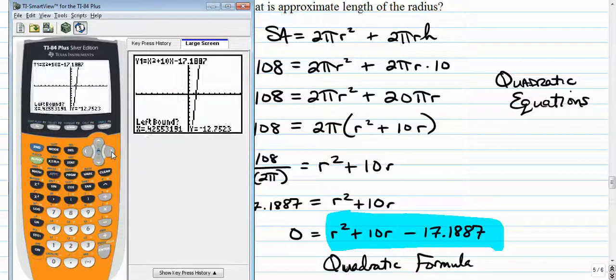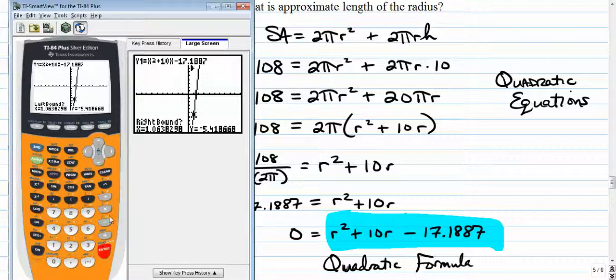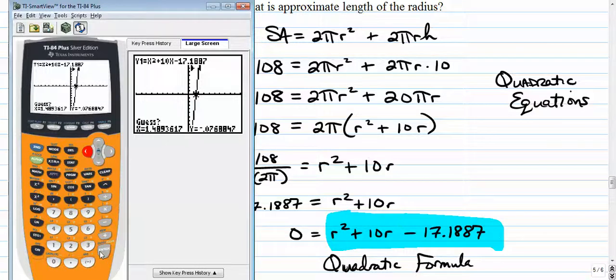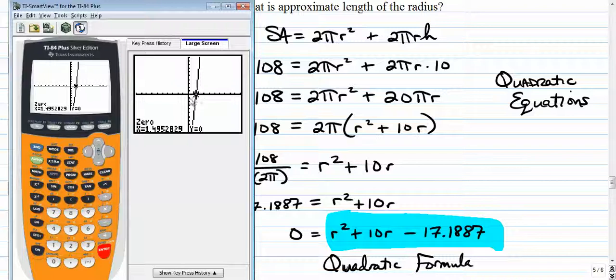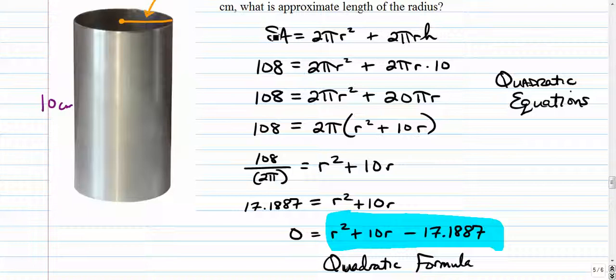Now for left bound, we could have just pressed enter. But I want to see, I want to show you that there's a blinking cursor. And you need to put that somewhere to the left of your x-intercept. So you press enter. Then the question is, what's the right bound? So you have to tell the calculator that you want to look in between these two arrows. So you have to go to the right somewhere and press enter. And that's going to ask you for a guess. So you just get your cursor as close as possible. And that is how your graphing calculator finds the solution of a quadratic. So the answer is 1.495. So the radius is 1.495 centimeters. And that's your answer.